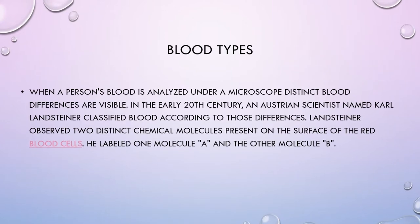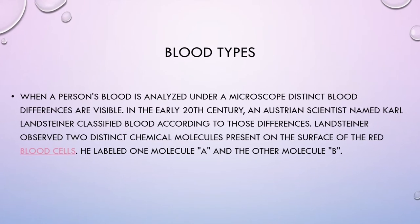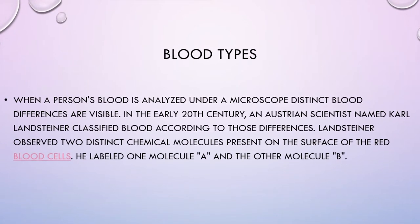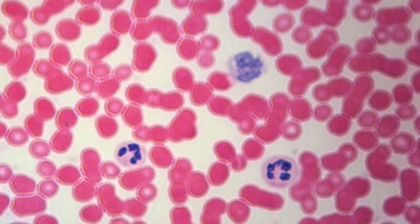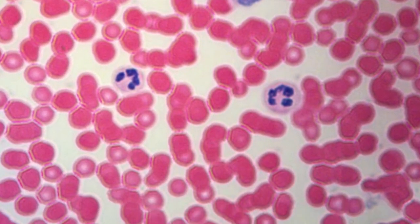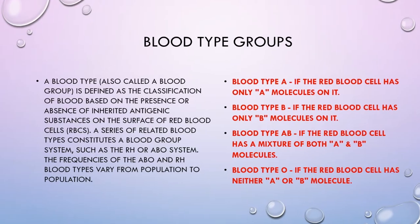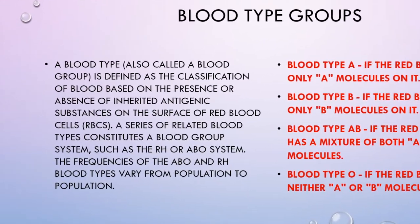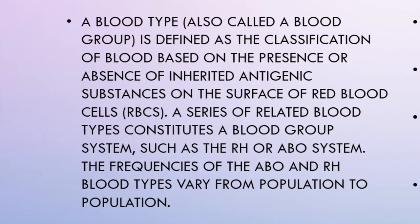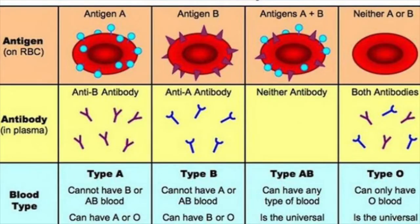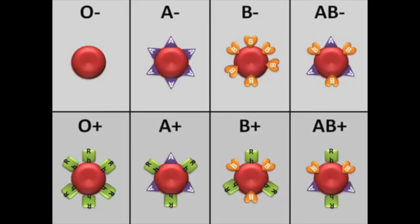When a person's blood is analyzed under a microscope, distinct blood differences are visible. Landsteiner observed two distinct chemical molecules present on the surface of the red blood cells. He labeled one molecule A and the other molecule B. A blood type, also called a blood group, is defined as the classification of blood based on the presence or absence of inherited antigenic substances on the surface of red blood cells. A series of related blood types constitutes a blood group system, such as the Rh or ABO system.